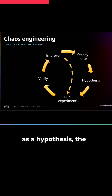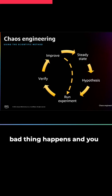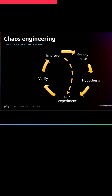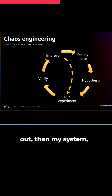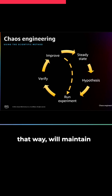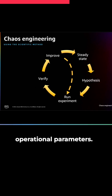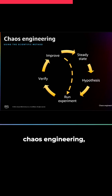Then there's a hypothesis. The hypothesis is: if some bad thing happens — and you specify the bad thing — if an EC2 instance dies, if an availability zone is not available, if a network link goes out, then my system, because I designed it that way, will maintain steady state. It will stay within those operational parameters. Now, if you didn't design it that way, don't do the chaos engineering. But if you designed it that way, you're testing that.